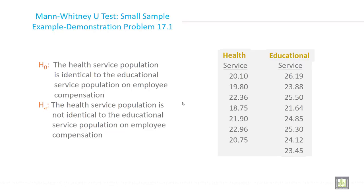Here the null hypothesis will be the health service population is identical to the educational service population on employee compensation. The alternative hypothesis is the health service population is not identical to the educational service population on employee compensation.